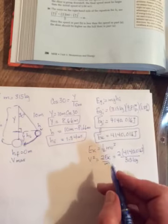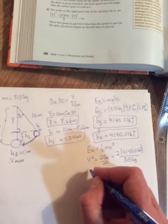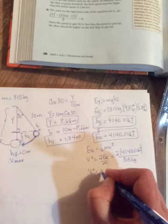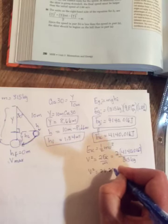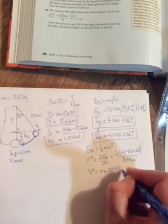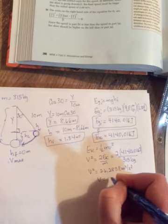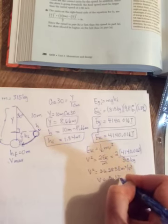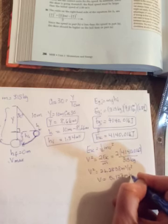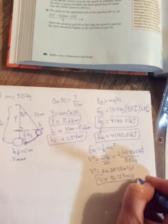You'll have to take the square root. So v squared gives you 26.2858 meters squared per second squared. Take the square root and get 5.127 meters per second. That's one way you could have done it.